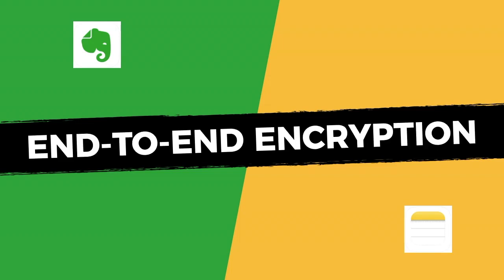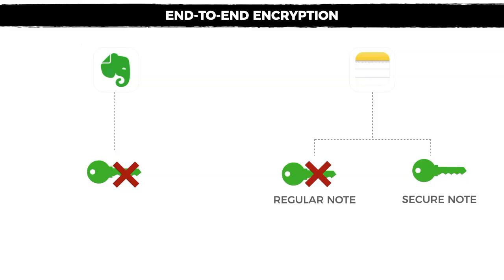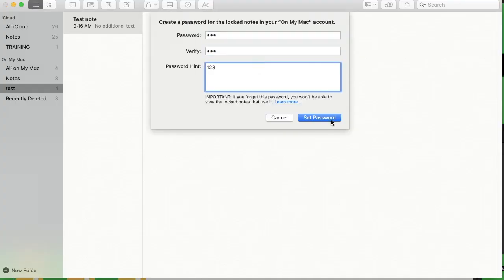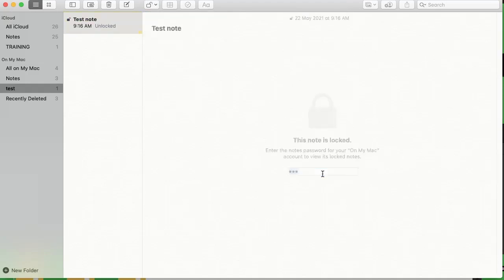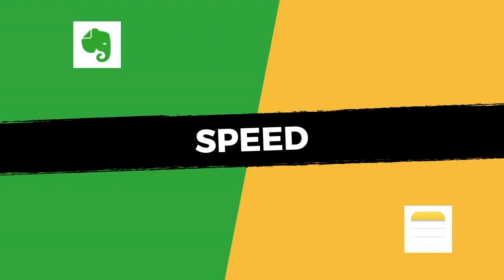When it comes to end-to-end encryption, Evernote has no end-to-end encryption as of the time of recording. Apple Notes has two types of notes: regular notes and secure notes. Secure notes are end-to-end encrypted, but by default all notes are regular notes. If you want all your notes end-to-end encrypted, you have to activate the secure note feature on every single note.